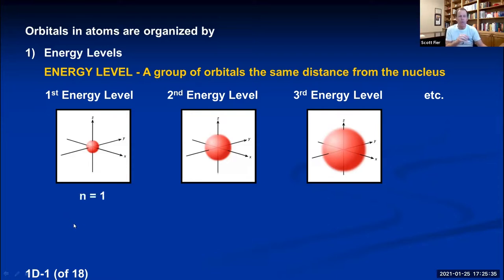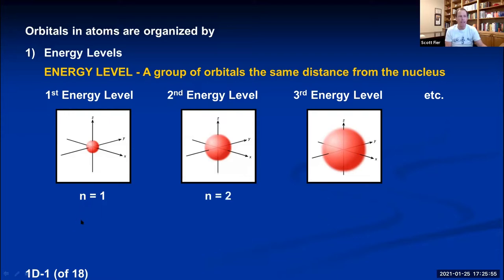Each energy level is designated with a number. Orbitals in the first energy level use n = 1, which is similar to the Bohr model where the first orbit was the n = 1 Bohr orbit. Orbitals in the second energy level are n = 2, third are n = 3, and so on.